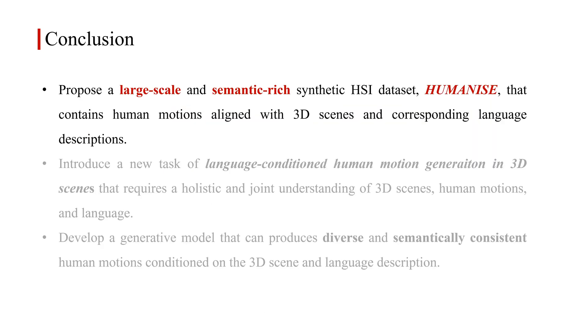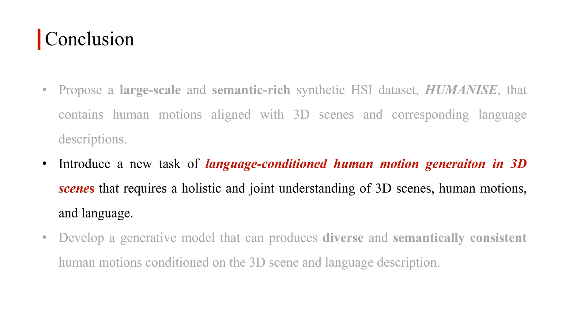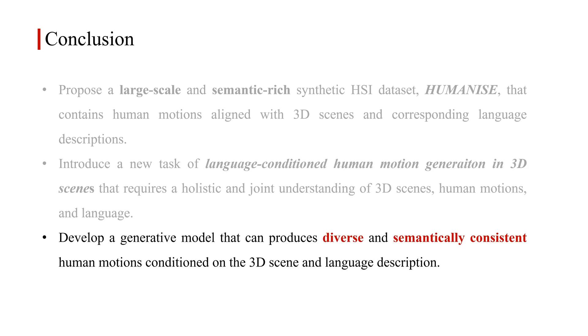In summary, we proposed a large-scale and semantic-rich synthetic HSI dataset named Humanize. Humanize contains human motions aligned with 3D scenes and corresponding language descriptions. We introduce a new generation task of language-conditioned human motion generation. It requires a holistic and joint understanding of 3D scenes, human motions, and natural language. We develop a generative model that can produce diverse and semantically consistent human motions given the 3D scene and language description. We believe our proposed dataset and model can facilitate the HSI research.